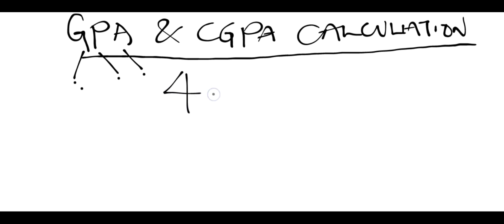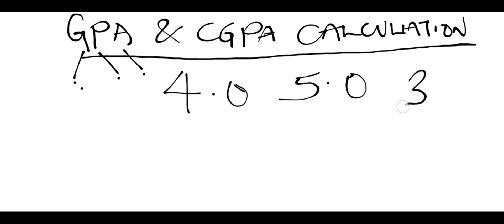CGPA comes in different formats. Some institutions use a 4-point grading system where the maximum a person can attain is 4.0. The majority of universities use a 5.0 grading system where the maximum is 5.00. There are also some institutions that use a 3.0 average grading system.